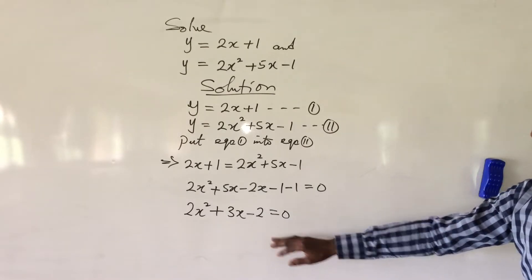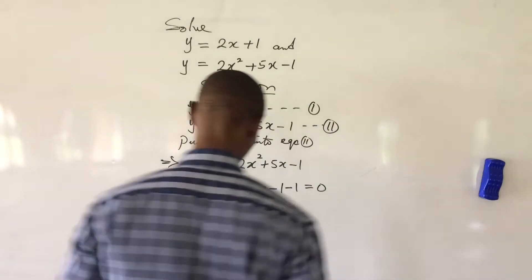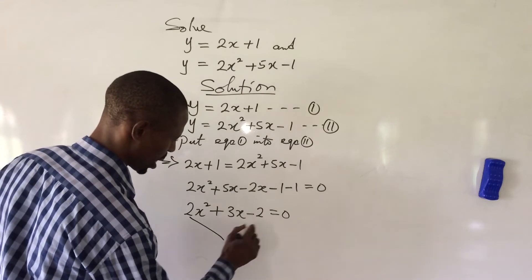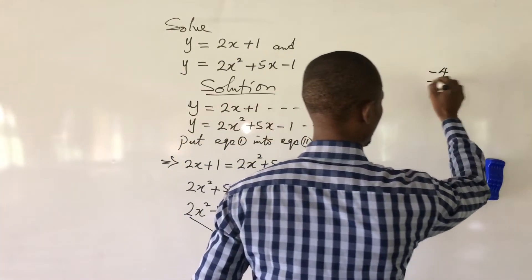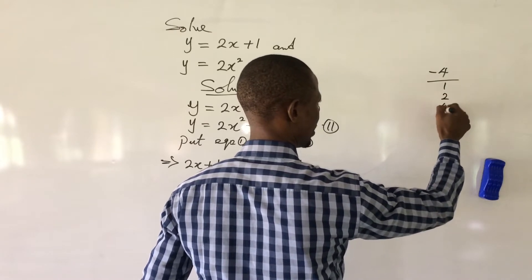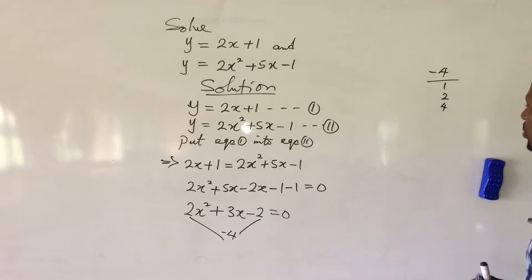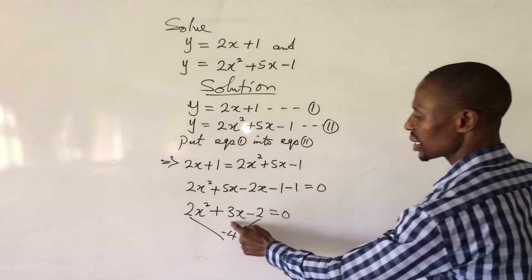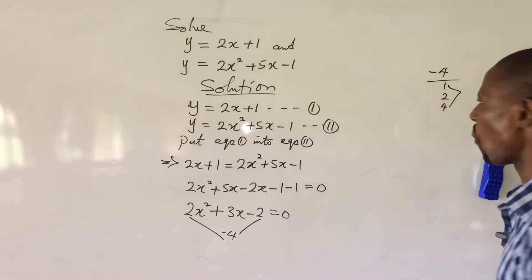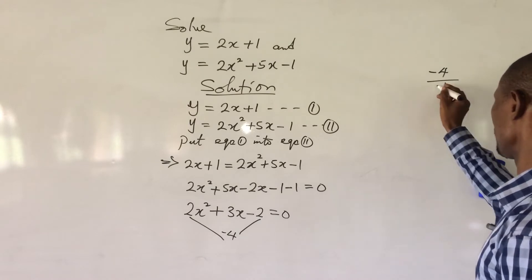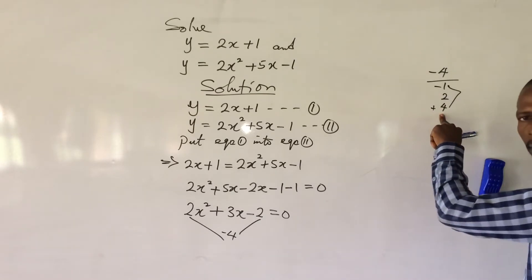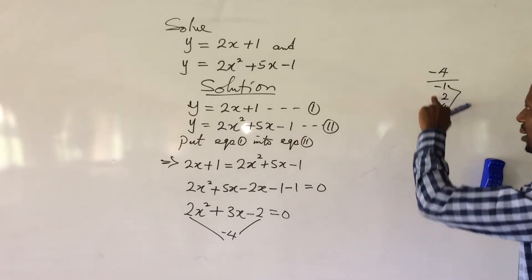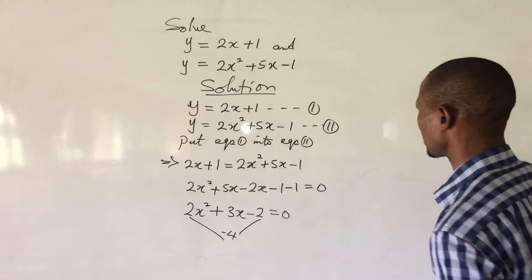We solve this quadratic using the factorization method. We bring the coefficient of x squared and the constant together, giving us negative 4. We look for two numbers that multiply to give minus 4 and add to give plus 3. Those two numbers are negative 1 and positive 4, because minus 1 times plus 4 gives minus 4, and minus 1 plus 4 gives plus 3.